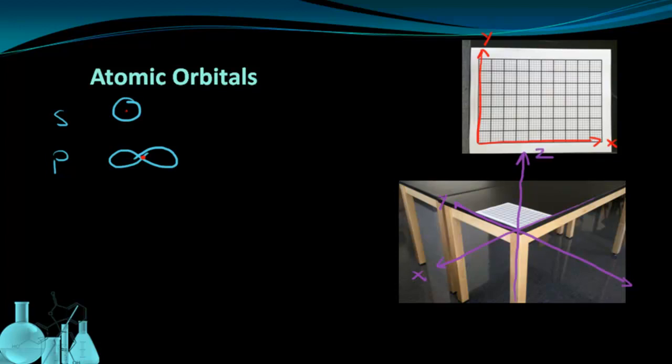And by using these three axes, the x, y, and z axes, we have a new coordinate system that we can use to describe a three-dimensional object. Now, let's see if we can map some of these s and p orbital shapes onto this three-dimensional system we just sketched out.